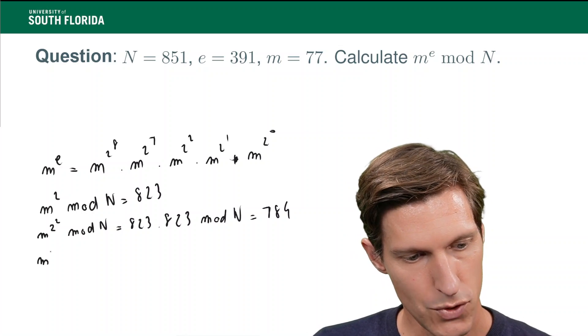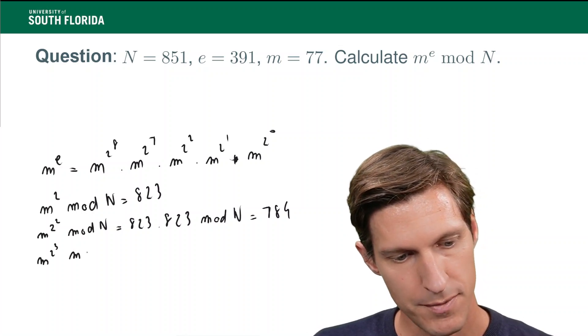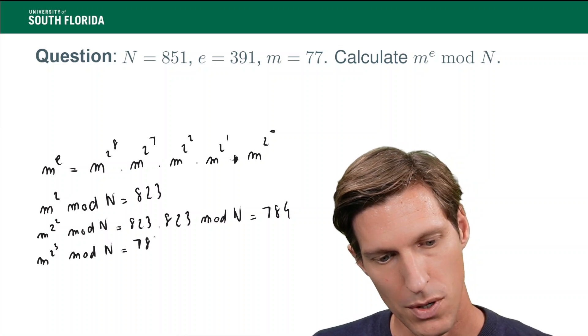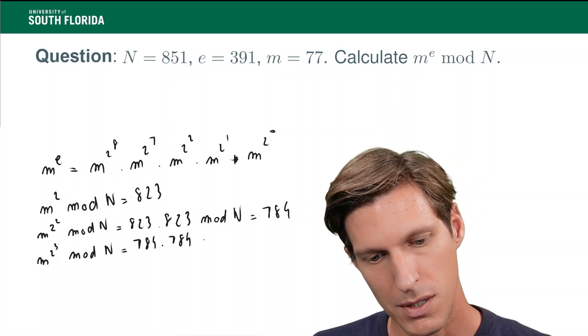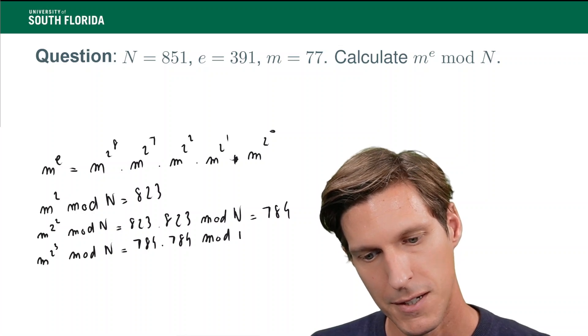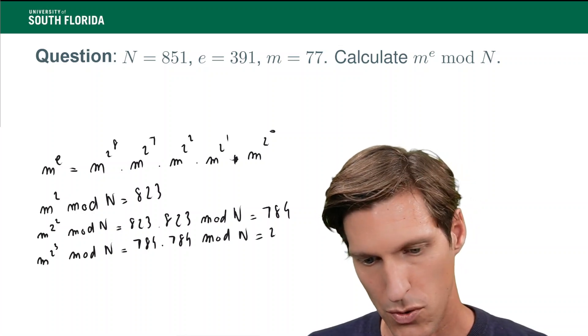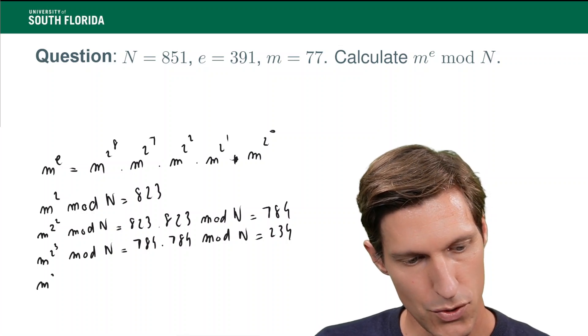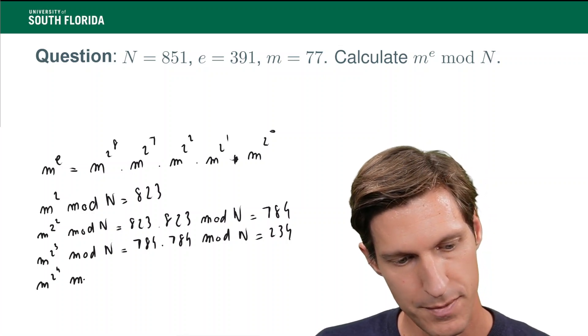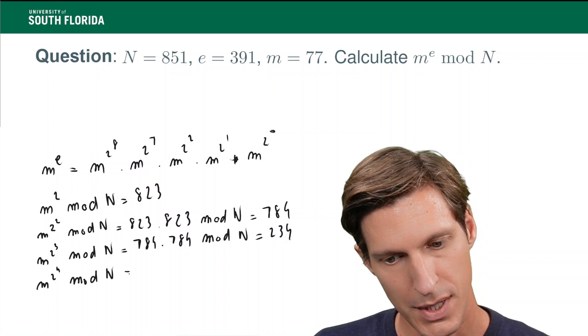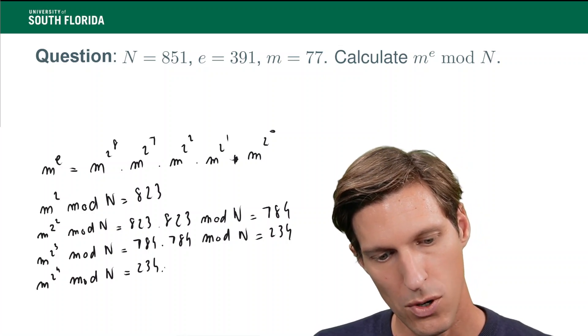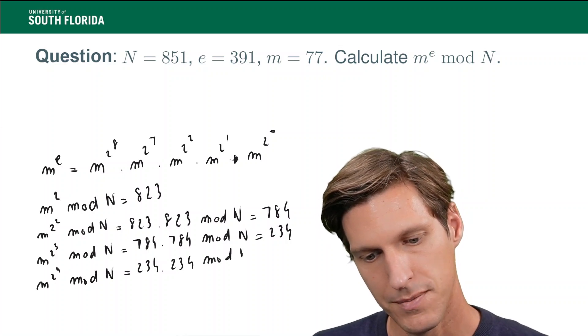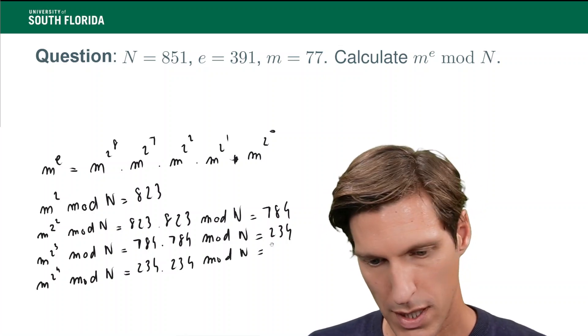Now, m to the two to the three mod n is now 784 times 784 mod n, and that is 234. M to the two to the four mod n, that's 234, and you're seeing this very repetitive at this point, mod n, and that's 292.